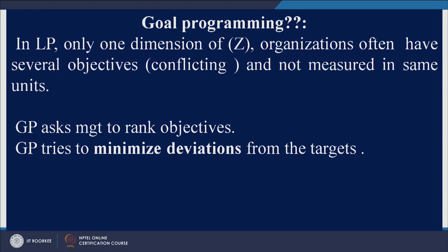Let us say if the objective is to maximize profit — we would not like to minimize profit, but we want to minimize deviation if the profit goal is not achieved. Let us say profit is not achieved by 100 rupees, so we will try to minimize that 100-rupee deviation. Let us look at an example — we will continue with the same example we did using LP.